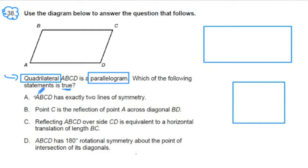Let's start with A. A says quadrilateral ABCD has exactly two lines of symmetry. Let's highlight that phrase, line of symmetry. Now, a line of symmetry means it's a line that bisects the shape in two equal halves, and you can fold the halves on top of each other.